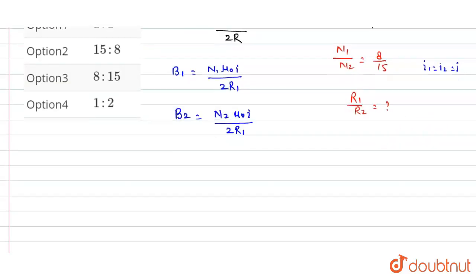So we can write that B1 equals B2, which implies N1 mu naught I divided by 2R1 equals N2 mu naught I divided by 2R2. Mu naught I and 2 will be cancelled out.